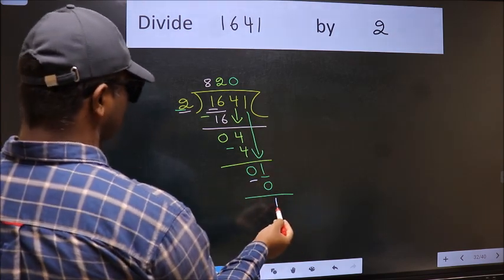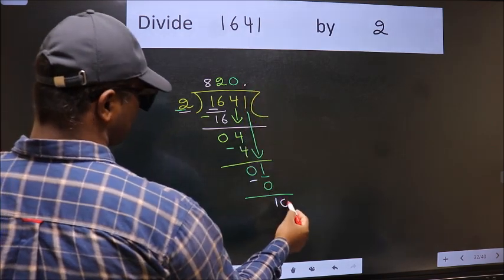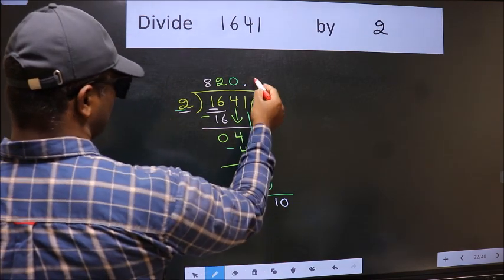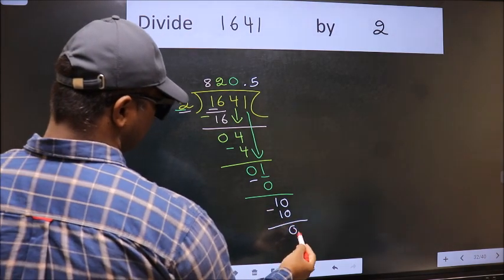And 1 is smaller than 2. So now we can put dot and take 0. So 10. When do we get 10 in 2 table? 2 times 5 is 10. Now we should subtract. We get 0.